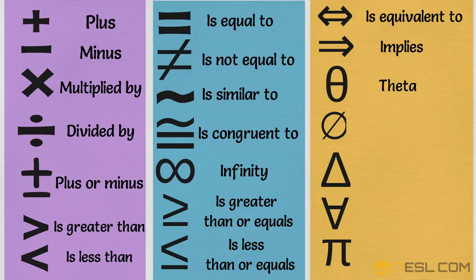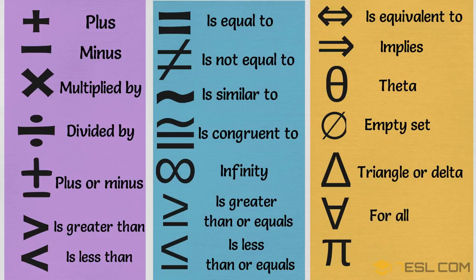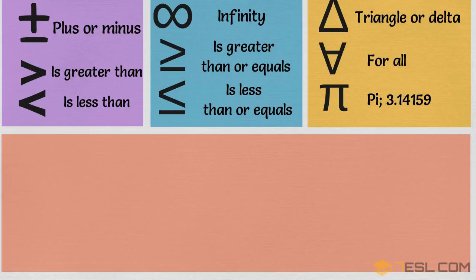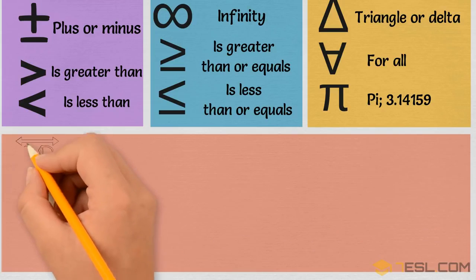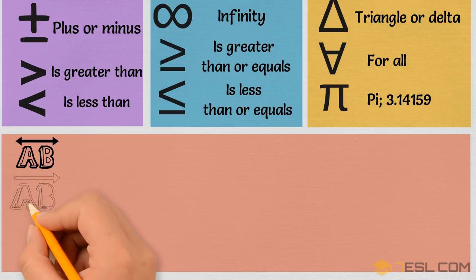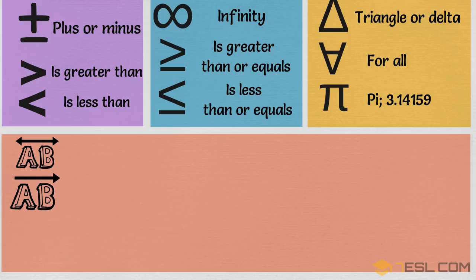Theta. Empty set. Triangle or Delta. For all. Pi — 3.14159. Line AB.